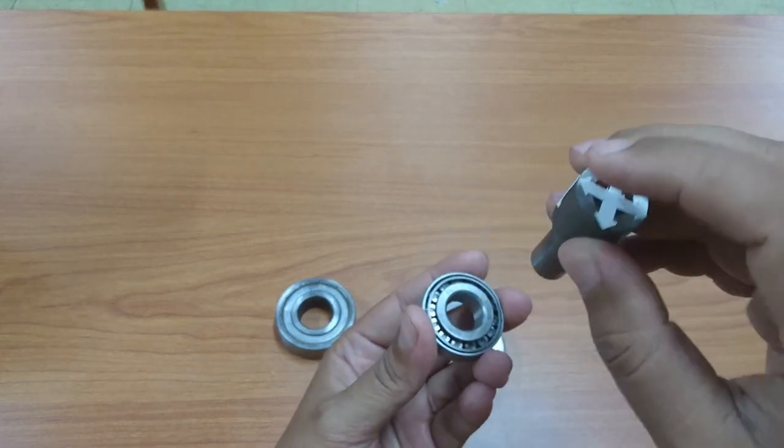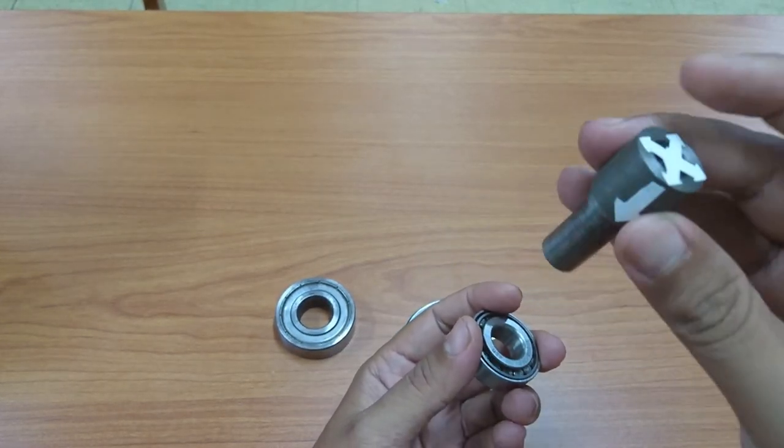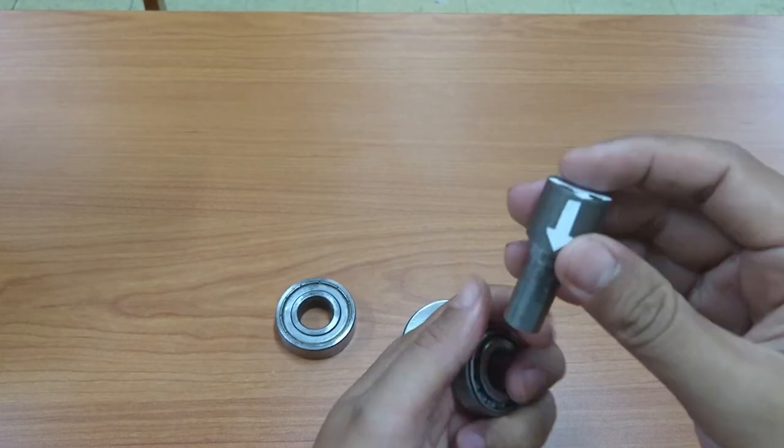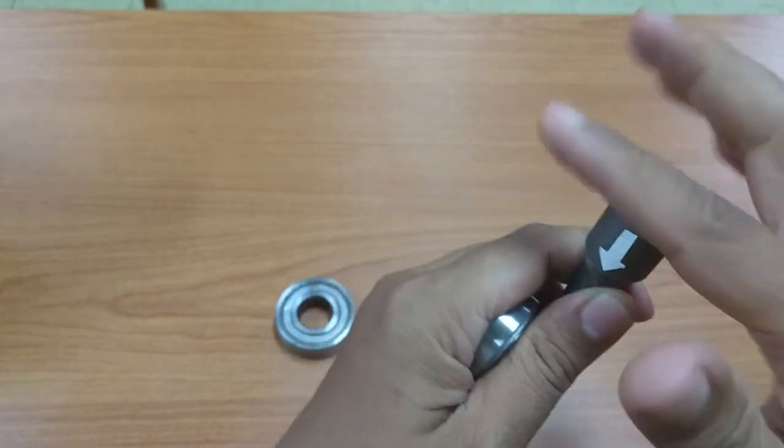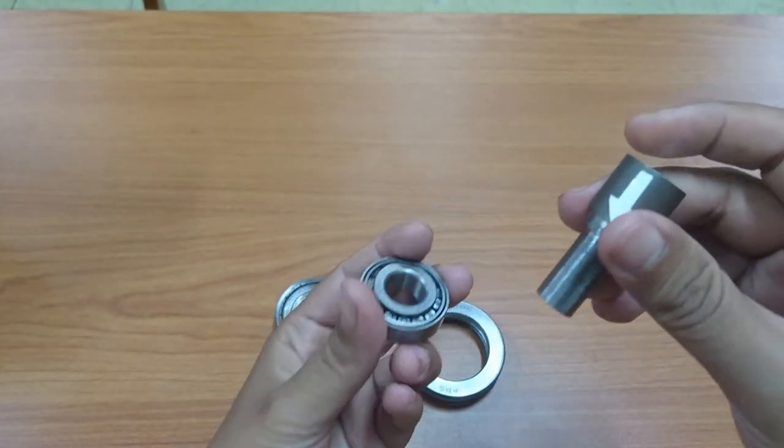This is a shaft. This shaft has two directions of load. The first is thrust load like this, and the second is radial load like this. This bearing can handle both of them.